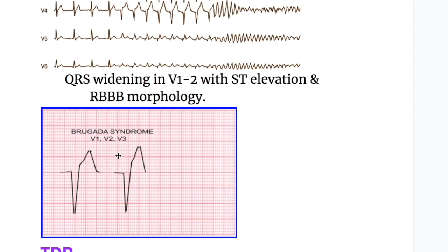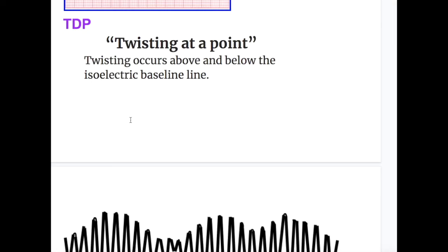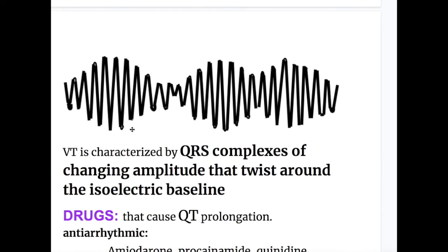Torsades de Pointes causes irregular wide complex polymorphic ventricular tachycardia. The name means 'twisting of points' — twisting occurs above and below the isoelectric baseline. VT in TdP is characterized by QRS complexes of changing amplitude that twist around the isoelectric baseline.